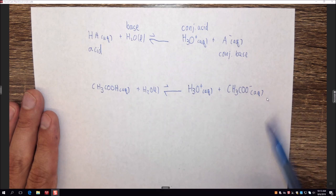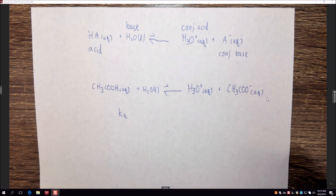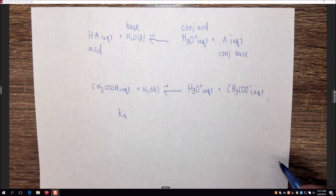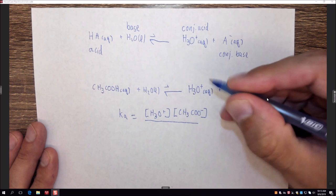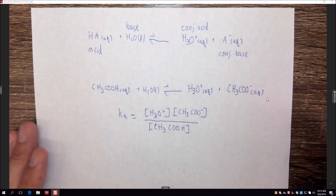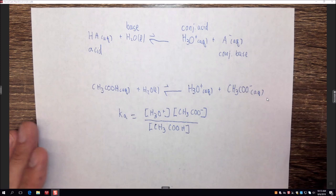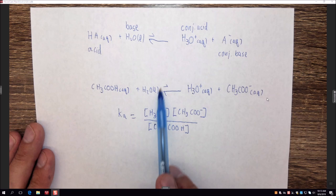We can write a Ka equilibrium expression for this. Ka is the same as any equilibrium constant — products over reactants. In this case, the products that are aqueous give us: Ka = [H3O+][CH3COO-] / [CH3COOH]. Just like other equilibrium expressions, we don't include solids and liquids, so water is not in the Ka expression.